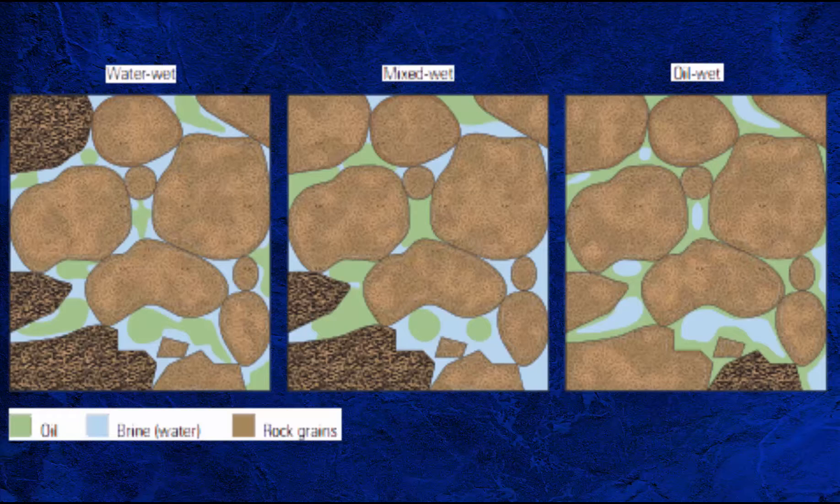Fractional wettability: the reservoir has local areas that are strongly oil-wet, whereas most of the reservoir is strongly water-wet. This usually occurs when the reservoir rock has variable mineral composition and surface chemistry.